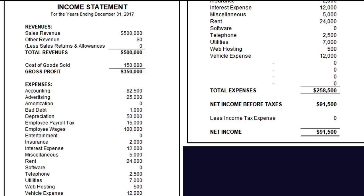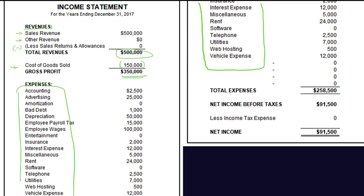Now here is an example of an income statement. First you have revenues: you record sales revenue, then other revenue, minus sales returns to get a total revenue. After that you have cost of goods sold — purchases and inventory — which you subtract from revenue to get the gross profit. Gross profit is not the final figure. You then subtract a list of expenses totalling 58,500, giving you a net income — also known as profit for the year — of 91,500.